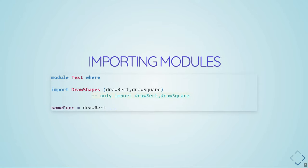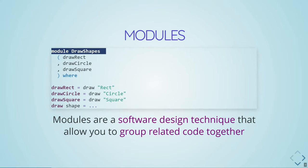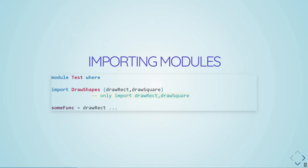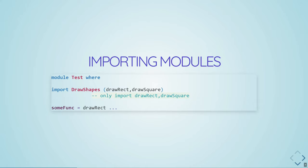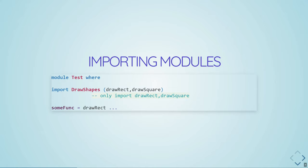When importing a module, it's best to only specify the functions you want to import. So whenever you want to use a module — like this DrawShapes module in one file — in another file with its own module declaration, such as test.hs, you would put 'import' and the name of the module, then specify in round brackets, separated by commas, which functions you want to import from that module.